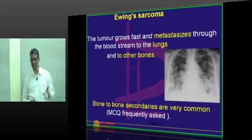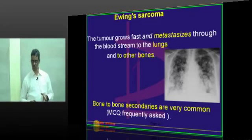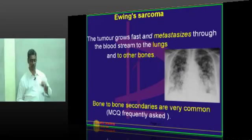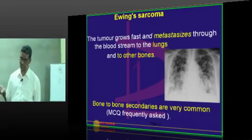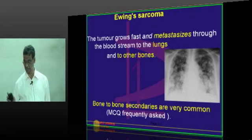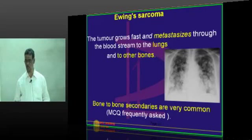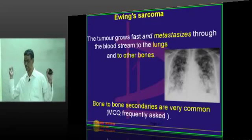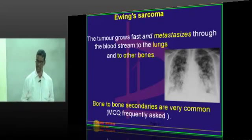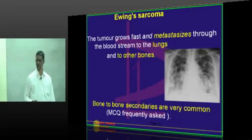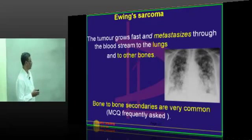The tumor grows fast and metastasizes to lungs like osteosarcoma. However, it also produces bone-to-bone secondaries. Some debate whether these are truly bone-to-bone secondaries or a multicentric cause — that Ewing sarcoma occurred simultaneously in different places. That is a controversy, but for exam purposes remember: bone-to-bone secondaries is a character of Ewing sarcoma, along with fever, constitutional symptoms, and onion peel appearance.